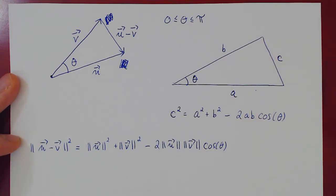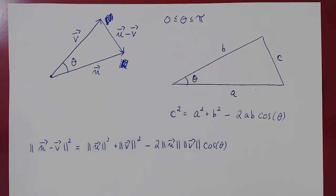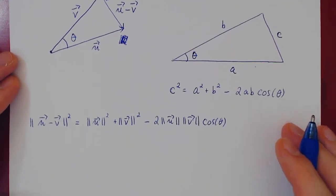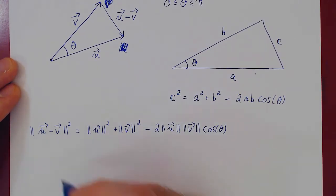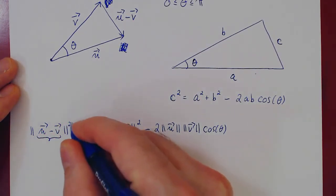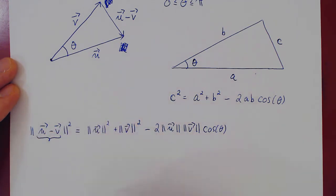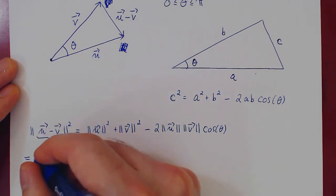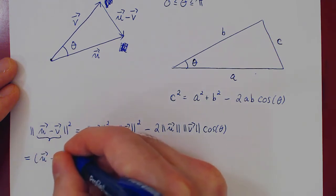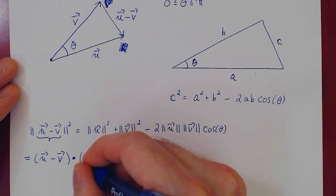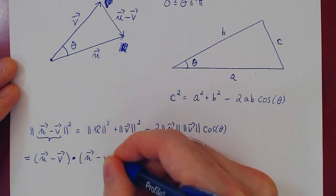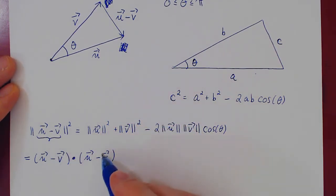Let's clean this up. If you remember, the connection between the norm of a vector squared and the dot product is that if you dot a vector with itself, you get the norm of the vector squared. So the norm of u minus v squared is just the vector u minus v dotted with itself. Let's expand this and see what we get.